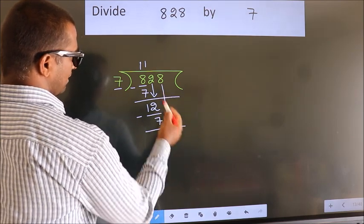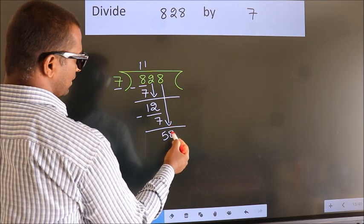After this, bring down the beside number. So, 8 down. So, 58.